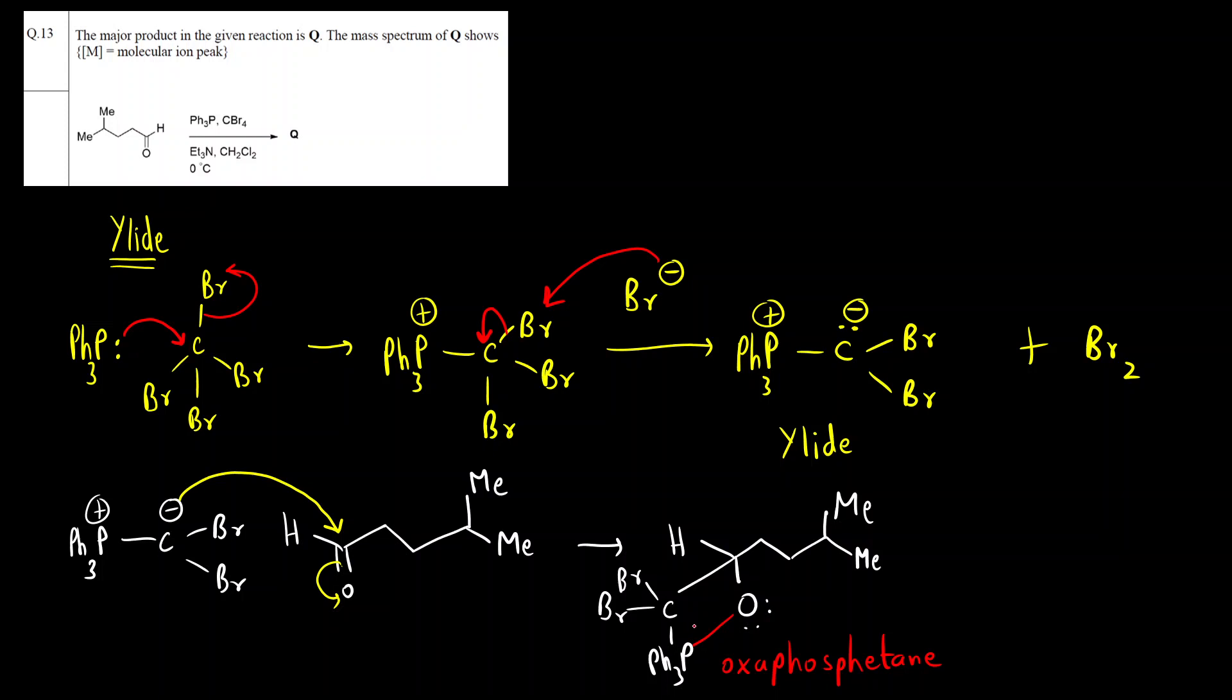Now what will happen? Phosphorus oxygen bond is very strong. So this will break like this. We will get triphenyl phosphene oxide.